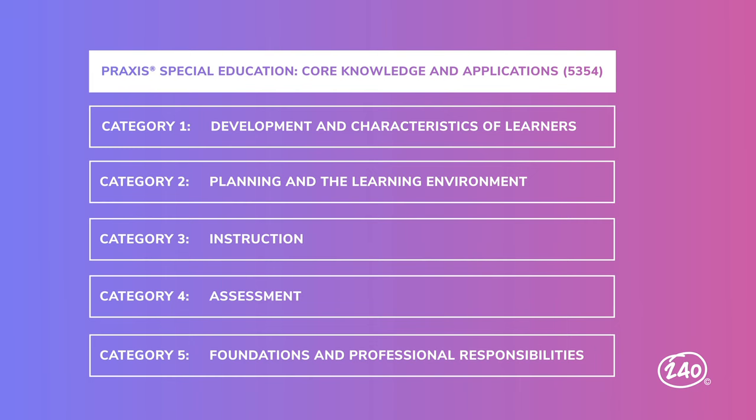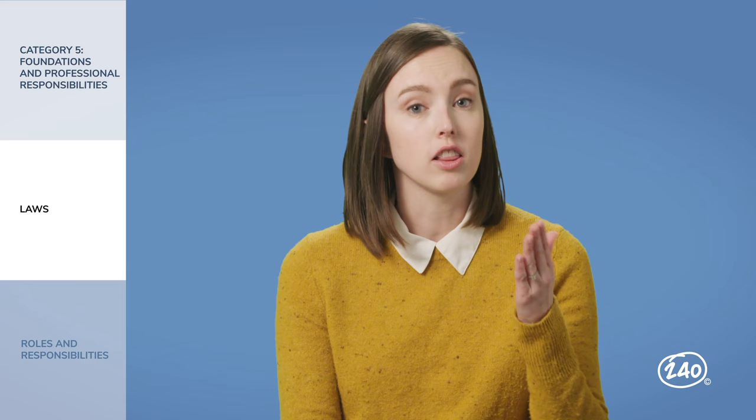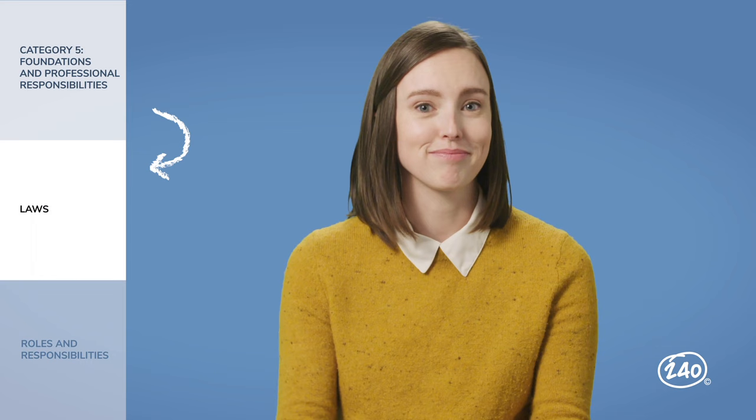Category 5, Foundations and Responsibilities, makes up about 20% of the questions on your test. While there's a lot of content in this category, it can really be broken down into two sections: laws, and the roles and responsibilities of everyone involved in the special education student's learning. Within laws, make sure you know your SPED rights like IDEA, student rights like the First Amendment giving them freedom of speech, and family rights such as FERPA to protect information.